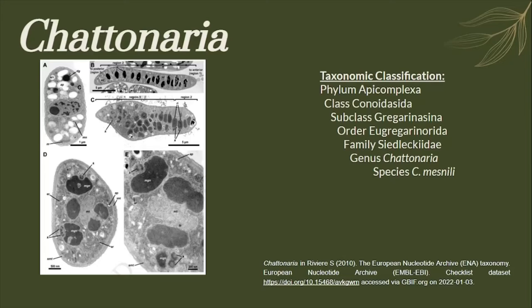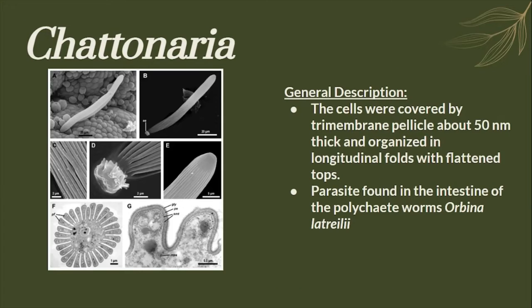Here is the taxonomic classification of the genus Chatonaria. The cells were covered by a trimembrane pellicle about 50 nanometers thick and organized in longitudinal folds with flattened tucks. It is a parasite found in the intestine of the polychaete worms, or Bina latreli.